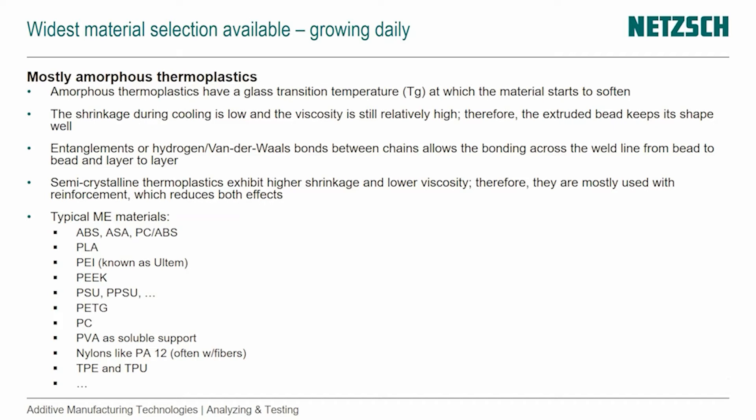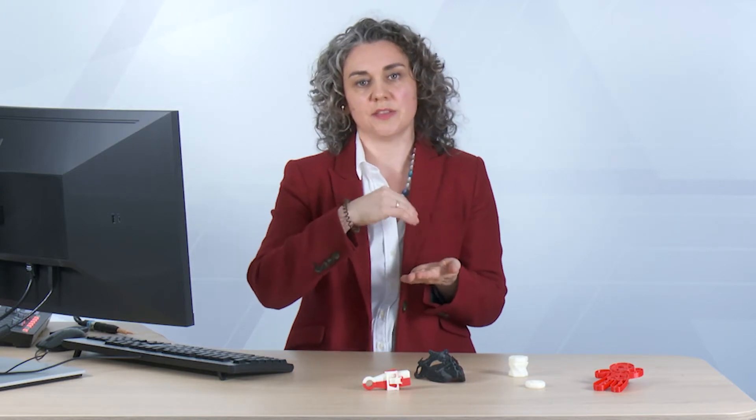The entanglements or hydrogen bonds, van der Waals bonds between the chains, allow the bonding across the weld line from bead to bead and layer to layer. If we put one bead next to the other, we have those beads actually weld, and then once we come back and put some on top, we need that to weld as well.